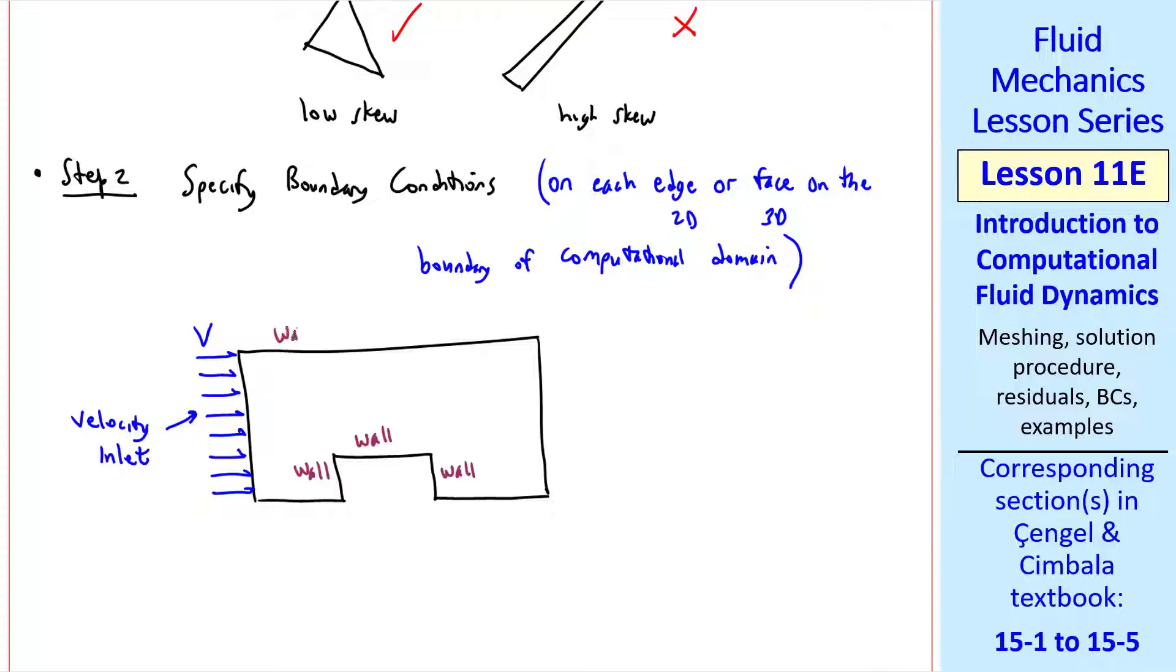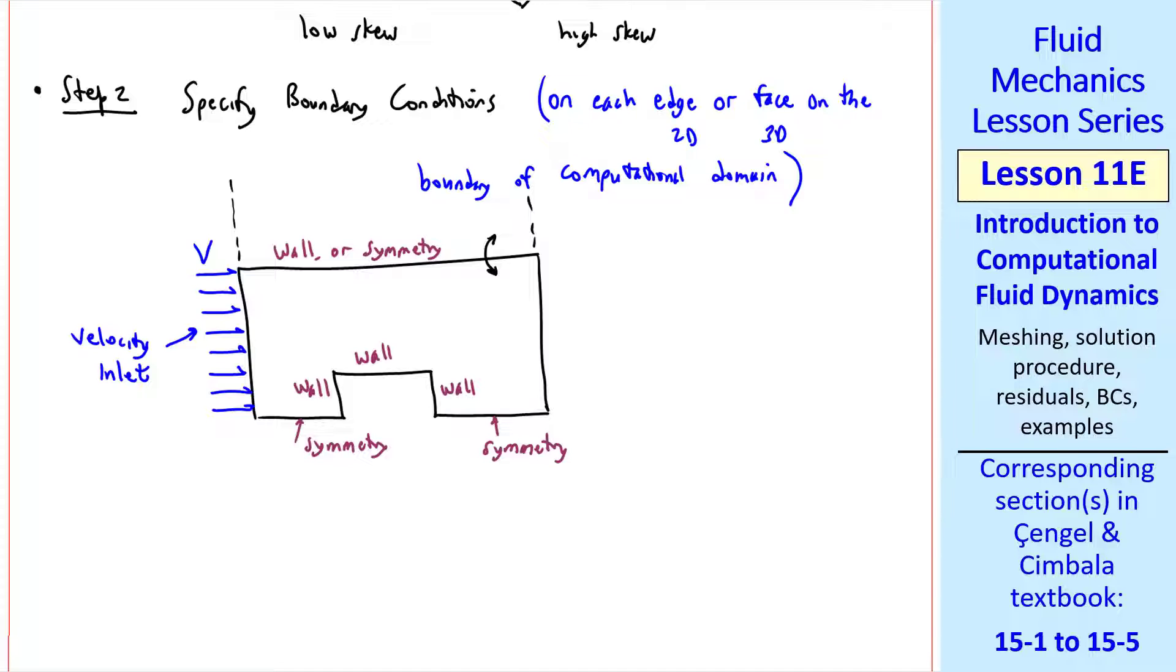This upper boundary could be a wall or a symmetry plane, meaning that everything above it is symmetric across that surface. If this were a block along a wall, you would specify wall boundary conditions here, too. If you specify symmetry, everything becomes a mirror image across that symmetry plane, including the velocity inlet and this boundary. Now we're modeling flow over a block in a free stream.